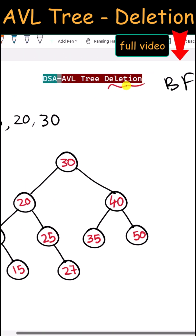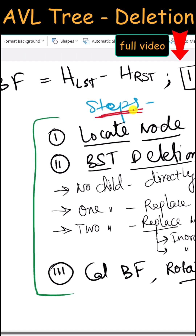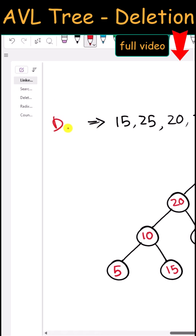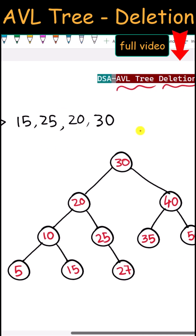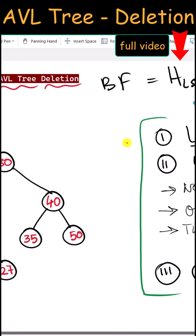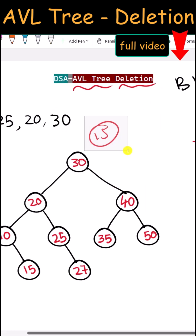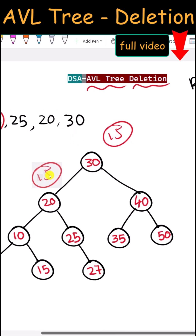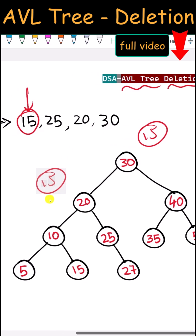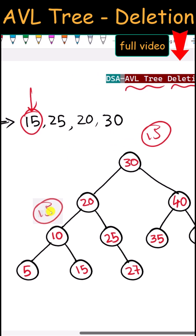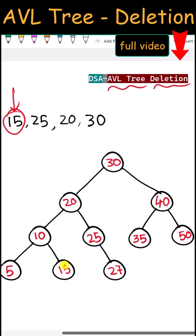Let's see how we can delete nodes in an AVL tree. Here are the steps to follow. Suppose we want to delete node 15. Since 15 is less than 30, we go left; less than 20, we go left again; greater than 10, we go right — and there we have the node.